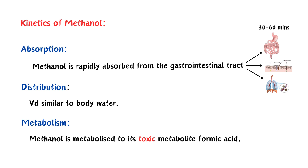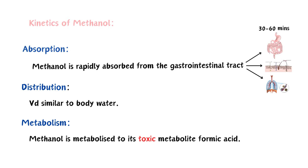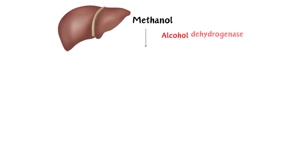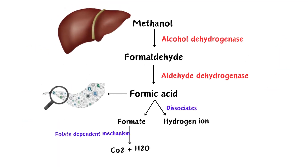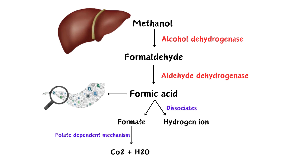Metabolism of methanol: when methanol is ingested, it is metabolized in the liver by the enzyme alcohol dehydrogenase into formaldehyde. This formaldehyde is quickly metabolized into formic acid, which accumulates in the body more slowly. Formic acid then dissociates into formate and a hydrogen ion.